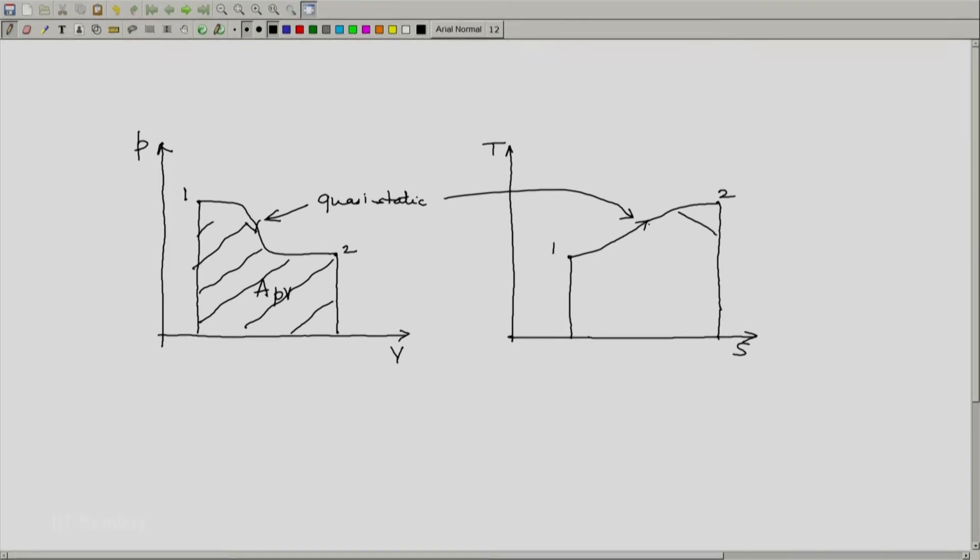because the process is quasi-static and we can define the area properly, let this area on the TS diagram be computed and let me call this area ATS. The question is, what do these areas represent?